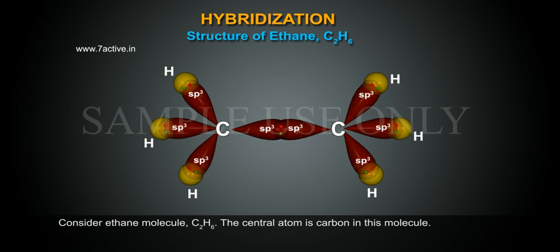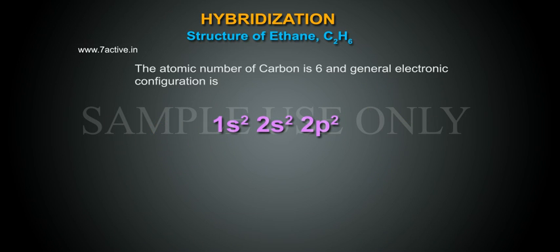The central atom is carbon in this molecule. The atomic number of carbon is 6 and general electronic configuration 1s2, 2s2, 2p2.